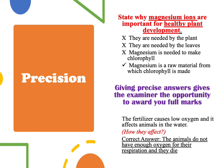Always give a precise answer so the examiner can award you full marks. For example, 'State why magnesium ions are important for healthy plant development.' Many students give general answers like 'they are needed by the plant.' You need to use biology theory — some students answer 'magnesium is needed to make chlorophyll', but the ideal answer is: 'Magnesium is a raw material from which chlorophyll is made.'